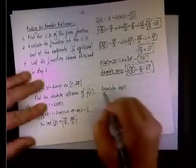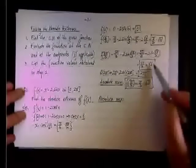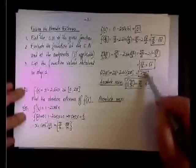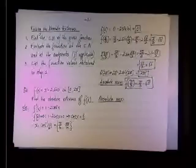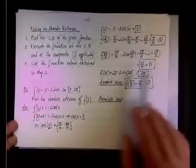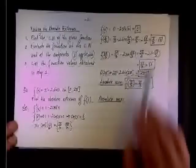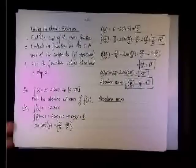What about the absolute max? The two values that are in competition: two pi and five pi over three plus square root of three. Two pi is 6.28. Five pi over three—is five pi over three plus 1.732 greater than 6.28?